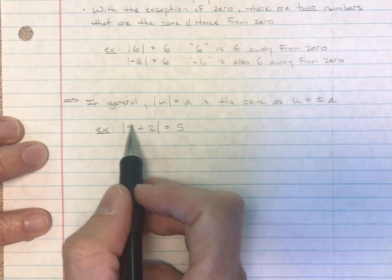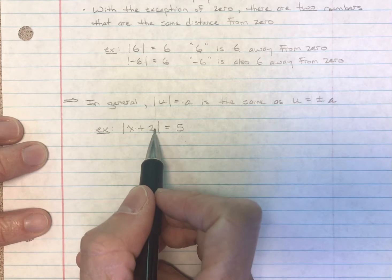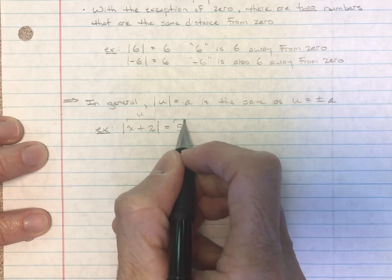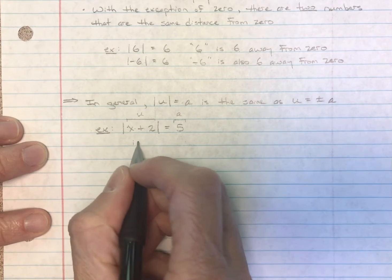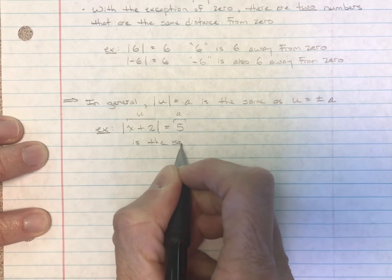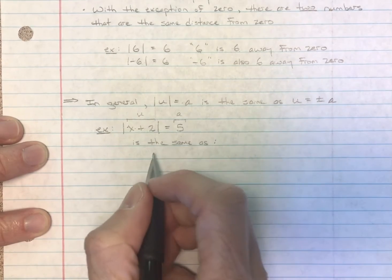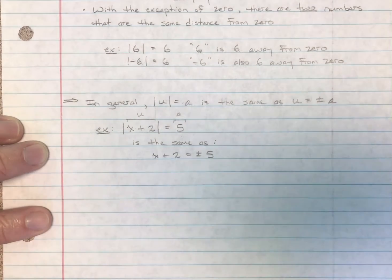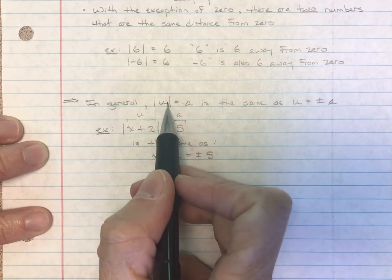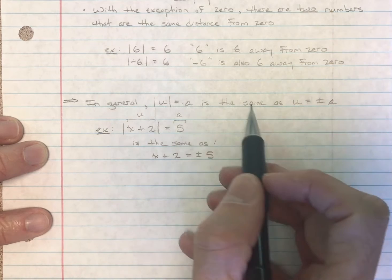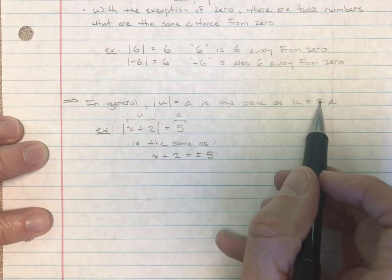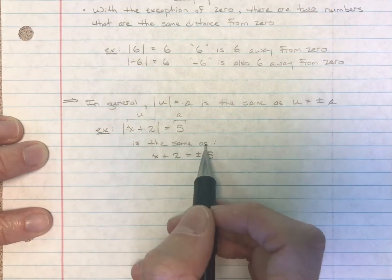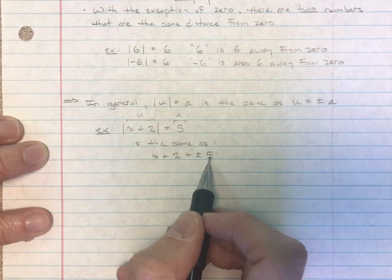Let's take a look at an example. The absolute value of X plus two is equal to five. X plus two is our U, and five is our A. So this is the same as saying that X plus two equals positive or negative five.